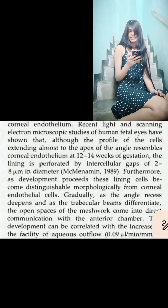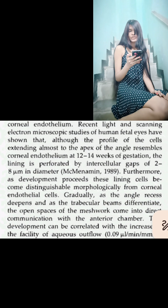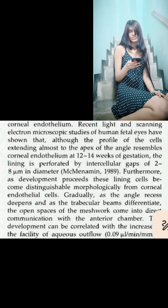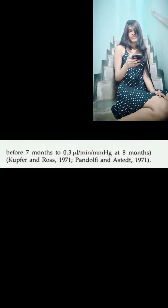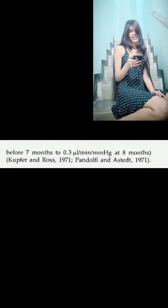Gradually, as the angle recess deepens and as the trabecular beams differentiate, the open spaces of the meshwork come into direct communication with the anterior chamber. This development can be correlated with an increase in the facility of aqueous outflow, from 0.09 microlitres per minute per millimetre of mercury before 7 months, to 0.3 microlitres per minute per millimetre of mercury at 8 months.